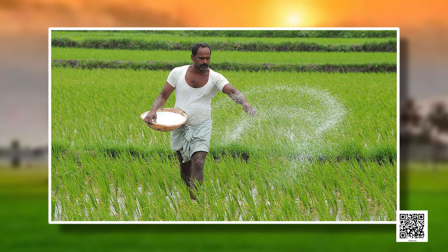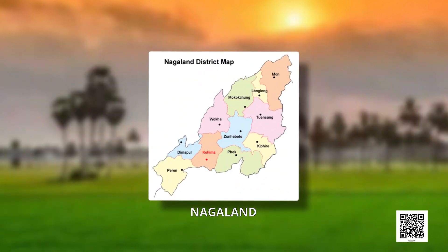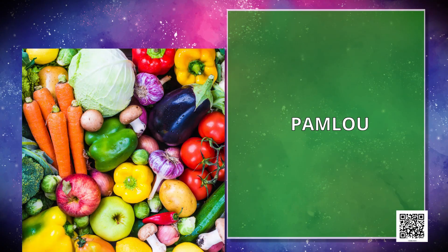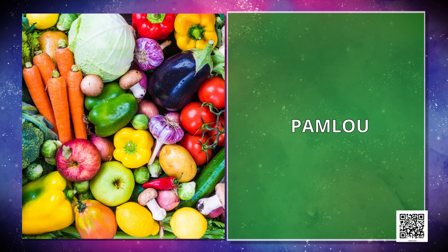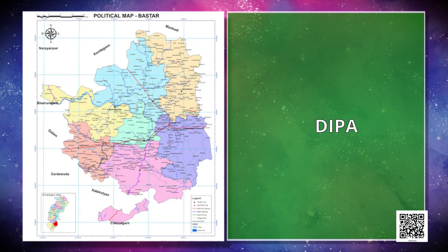It is known by different names in different parts of the country. In northeastern states like Assam, Meghalaya, Mizoram and Nagaland, it is known as Jhoom Kheti. In Manipur, it is known as Pamlao. It is called Deepa in Bastar district of Chhattisgarh and in Andaman and Nicobar Islands.